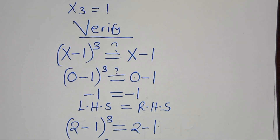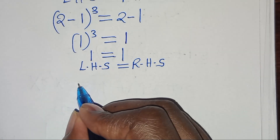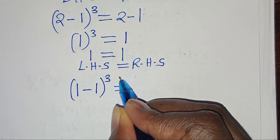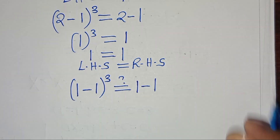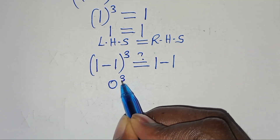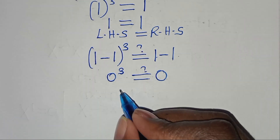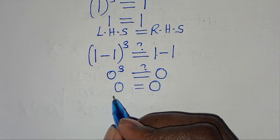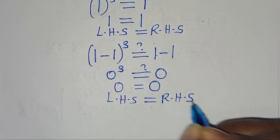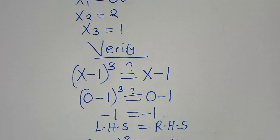Now, let's check x3, which is equal to 1. So, here we have 1 minus 1 to the power of 3, this is supposed to be equal to 1 minus 1. This implies that 1 minus 1 is 0, to the power of 3, which should be equal to 1 minus 1, which is 0. So, 0 is equal to 0. Therefore, the left-hand side is equal to the right-hand side, and this affirms that the 3 solutions satisfy the equation.